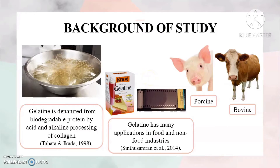Gelatin is denatured from biodegradable protein by acid and alkaline processing of collagen. Gelatin has many applications in food and non-food industries, such as yogurt for food and photographic films for non-food industries. It is commonly sourced from porcine and bovine.